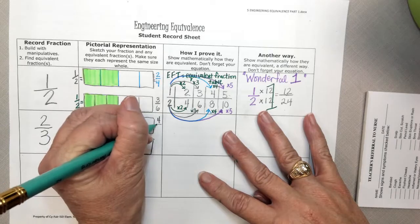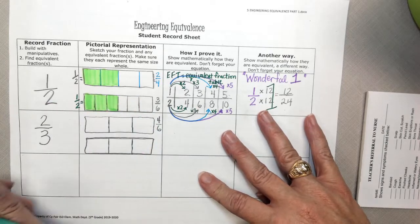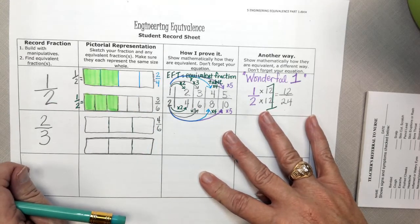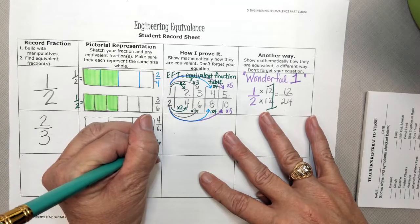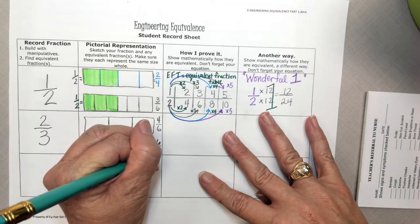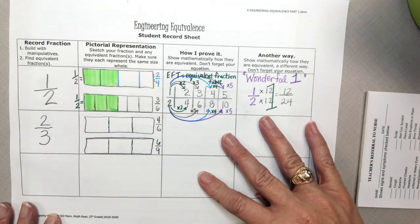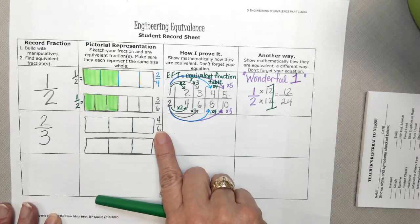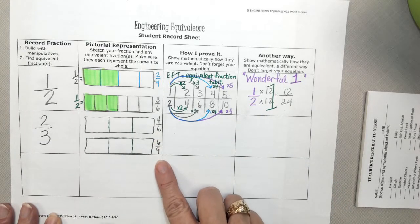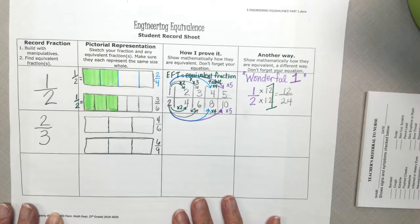But I want to prove that there's another name for 2 thirds out there. So let's go ahead and write 4 sixths down. 4 sixths is one of our fraction names that we're trying to prove is equivalent. And the fraction 6 ninths.